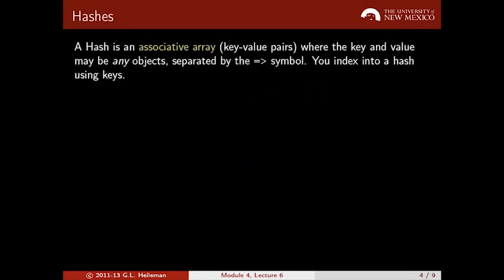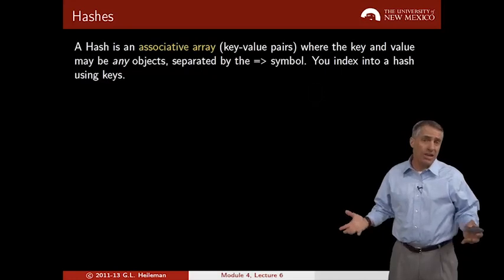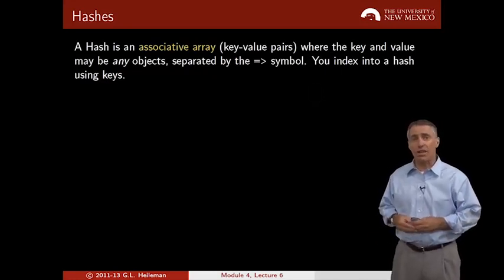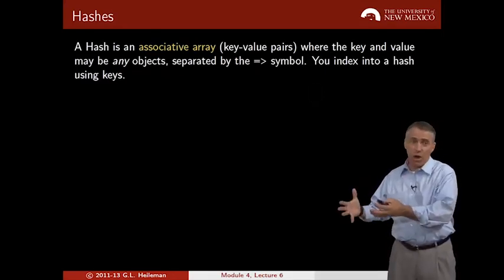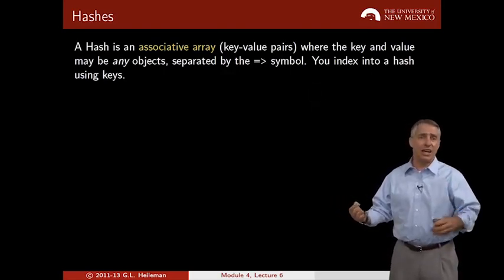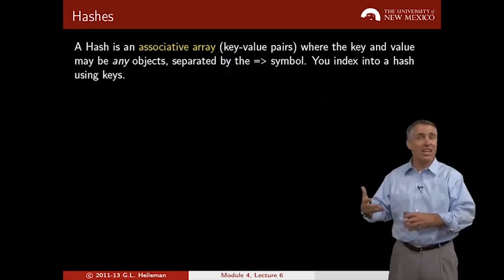Now let's talk about hashes. A hash is just an associative array. We've seen arrays, and you index array according to an integer: zero, one, two, three. With a hash, it's an associative array. In other words, rather than having an integer index, you have some other object to index some value. You just get a key and a value. For an array, that key is an integer. For a hash, it's any object.